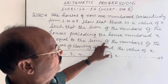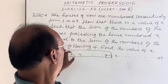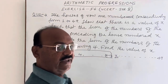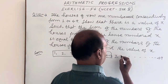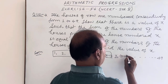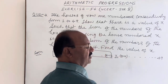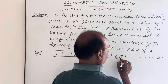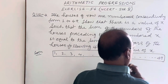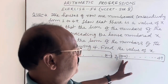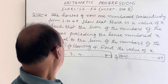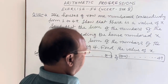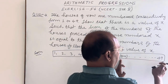We have to show that the sum of all numbers from 1 to x minus 1 is equal to the sum of the numbers of the houses following it. Following x means from x plus 1 onward, so we take the sum from x plus 1 to 49. We are given that 1 + 2 + ... + (x−1) is equal to the sum from x+1 to 49.